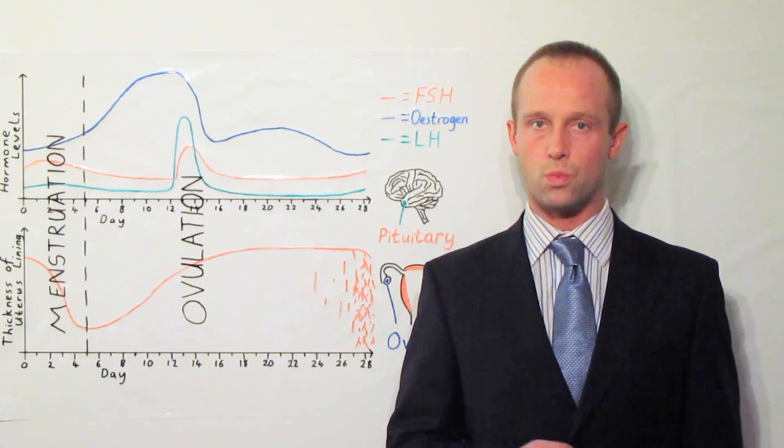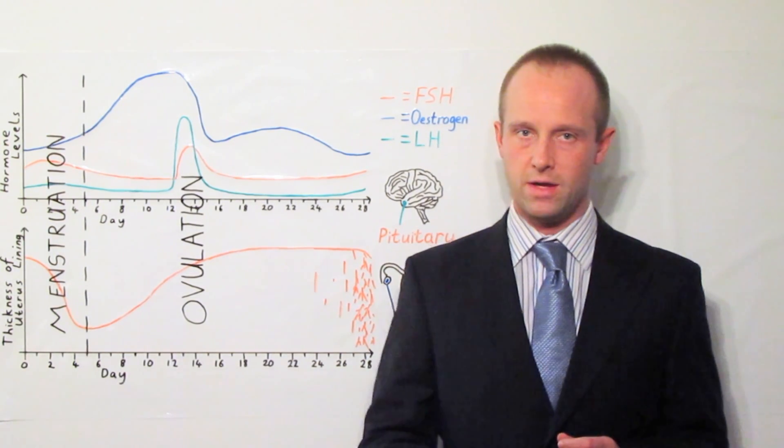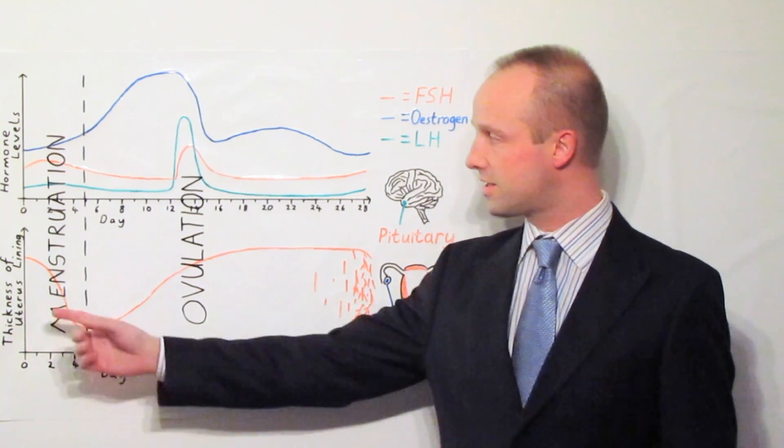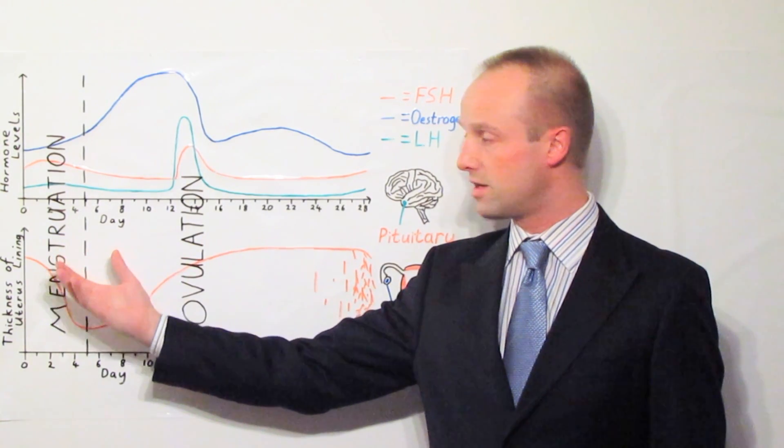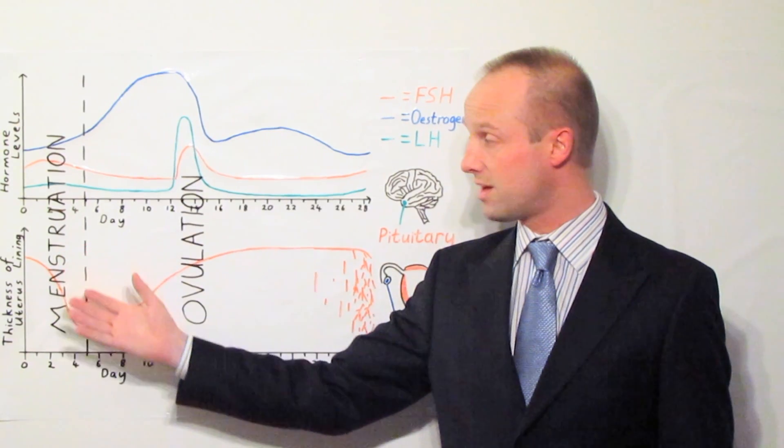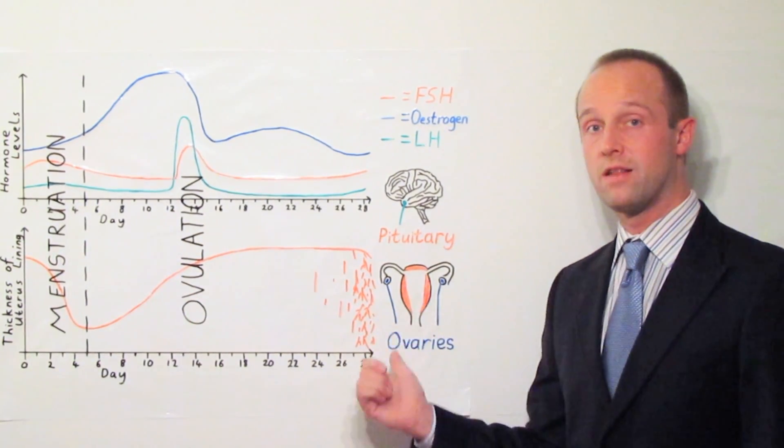Let me just run through those one more time just to pick out the key points which you need to be aware of. Firstly, this whole process starts at the start of the menstrual cycle, here in this period that we call menstruation where the uterus lining from the previous month passes out through the cervix and then through the vagina.